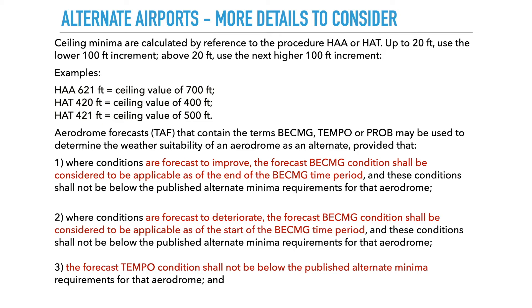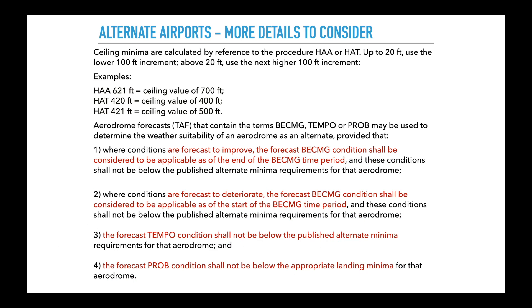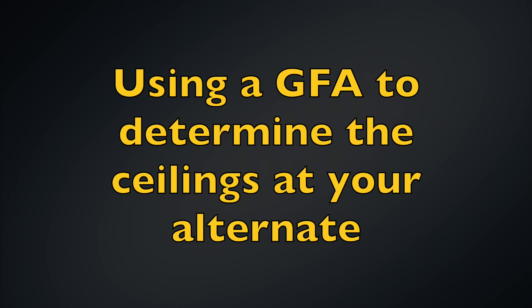You can also use TEMPO to determine your alternate — again, the weather shall not be below the published alternate minimums for that airdrome. And finally, this might surprise you: you can use a probability — either PROB30 or PROB40 — for determining your alternate, but this time the forecasted weather in the probability shall not be below the landing minimums for that aerodrome, which are the minimums listed on your approach chart.